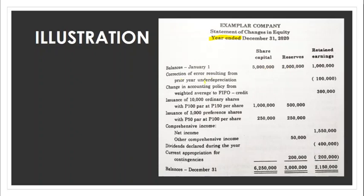For example, if issuing 10,000 shares at par of 100, that gives share capital of 1,000,000. The excess of 50 pesos per share multiplied by the number of shares gives 500,000 as reserves. The statement also includes a preference share issuance as another component.